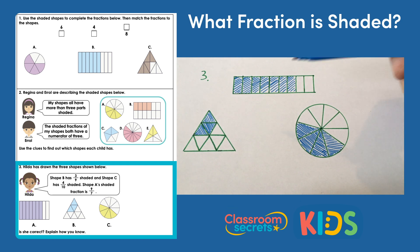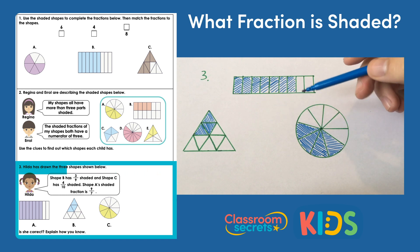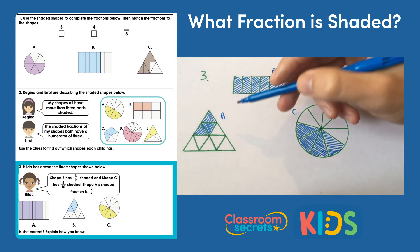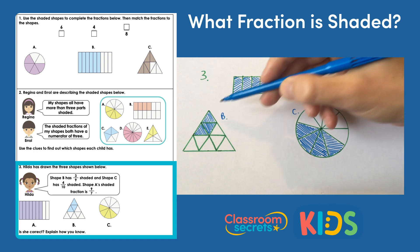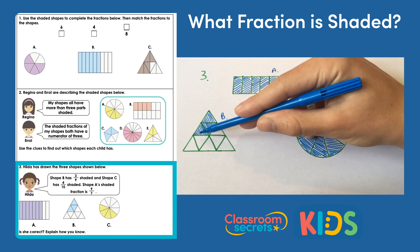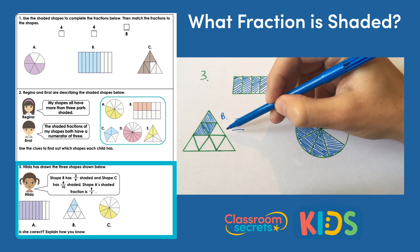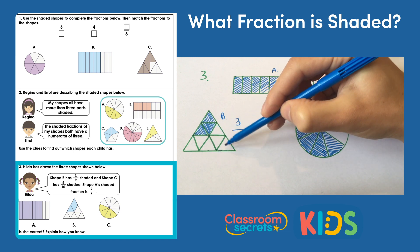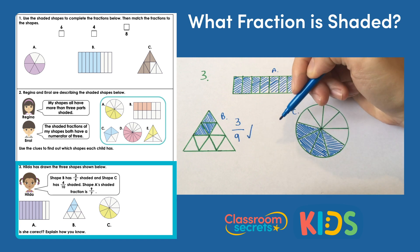For question three, Hilda has drawn three shapes and shaded some in. She says shape b has three ninths shaded. Looking at shape b, we've got three parts shaded — that's correct for the numerator. Then there should be nine parts altogether for the denominator. Counting them: one, two, three, four, five, six, seven, eight, nine. So shape b is correct — three ninths.